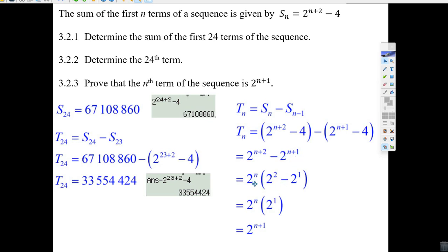Well, now we factor out 2 to the n. Hey, this is 2 to the n times 2 squared minus 2 to the first. Well, what's four minus two? That's just 2 to the one. And 2 to the n times 2 to the one, hey, that really does equal 2 to the n plus 1.